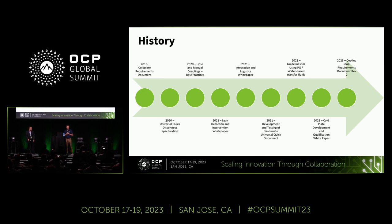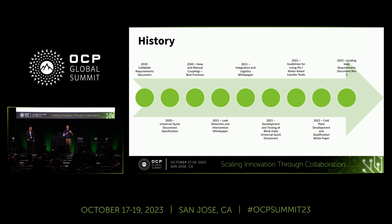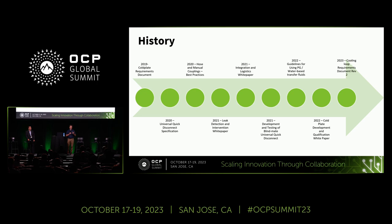Taking a walk back down memory lane: in 2019, the first cold plate requirement document was written by Jessica from Intel, Nigel, and Elizabeth Langer. That started off a cascading event of a bunch of other white papers that deep dive into different technology domains within the TCS loop. The UQD spec came out, and the hose and manual coupling best practices. All of these documents were much more in-depth than the cold plate requirements, but there was a little bit of overlap. So when they started the process of revising this and reformed the group, the intent was to take all of the information, provide a summary and a link to all of these different documents.